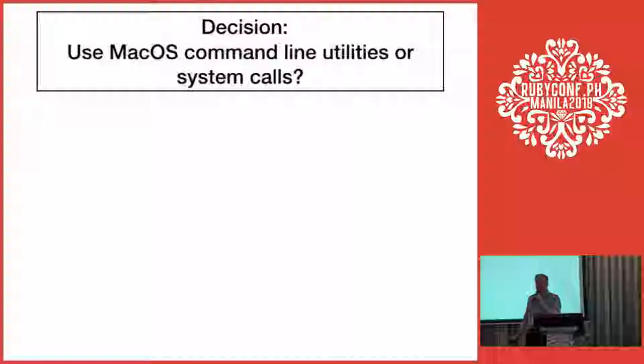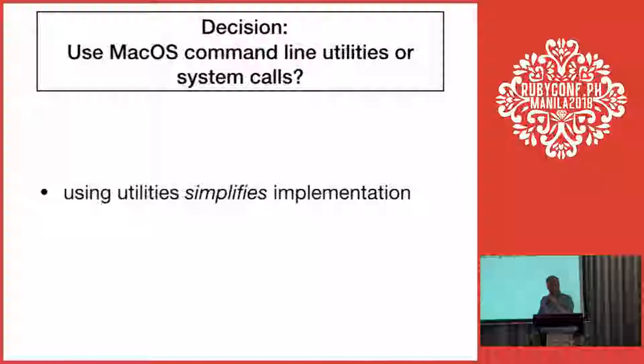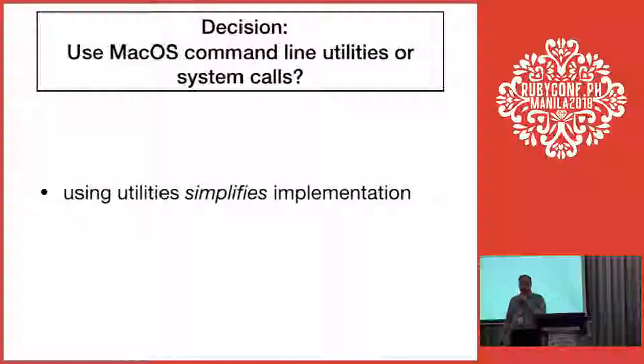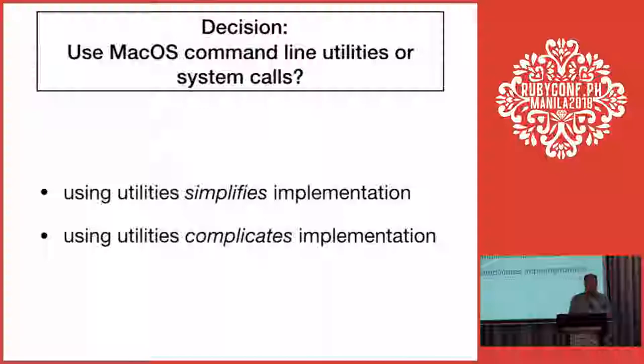Another question was: do I want to use Mac OS utilities to access Wi-Fi functionality, or go deeply into the OS myself using system calls or AppleScript? I decided to use Mac OS command line utilities because that simplified the application — I didn't have to do all that low-level stuff. What I found over time, though, was that using the utilities also complicated things, because I had to parse human-readable output, and there were many oddities and fuzzy cases.